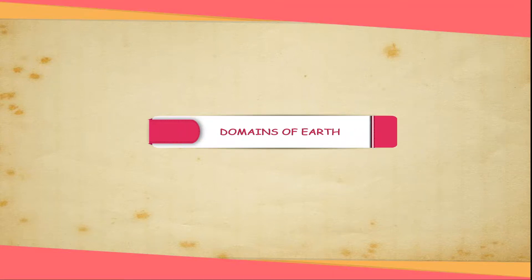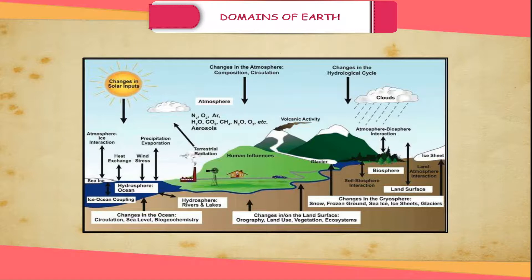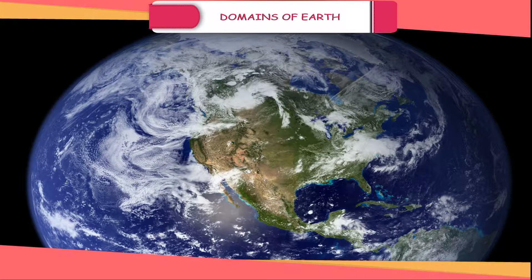Domains of Earth. Earth is the only planet in the solar system which sustains life. The major domains of the Earth which help to sustain life are lithosphere, atmosphere, hydrosphere and biosphere. These domains are interactive and interdependent spheres.